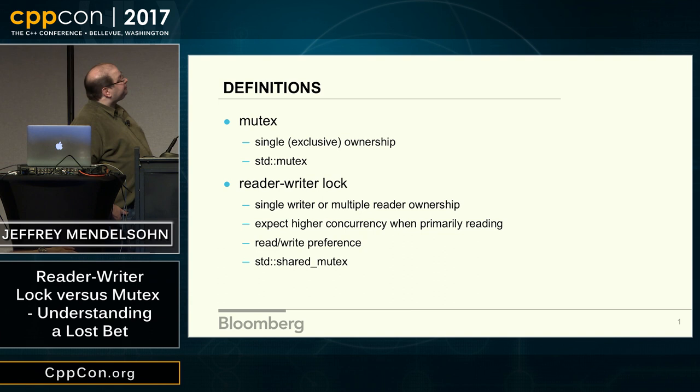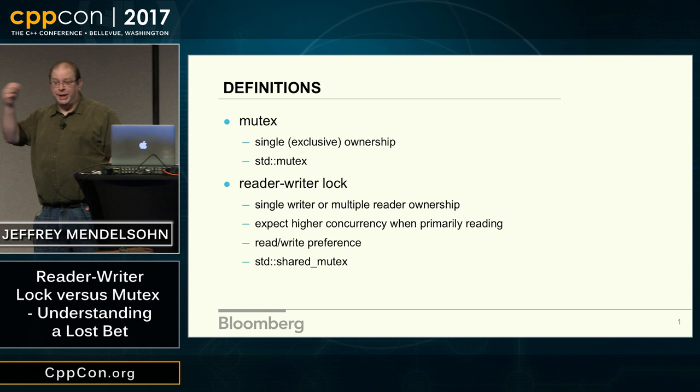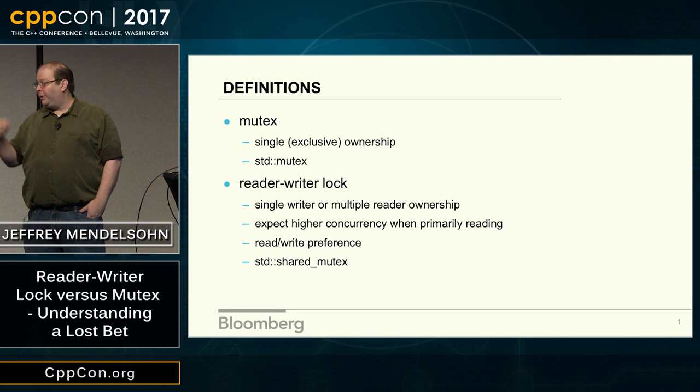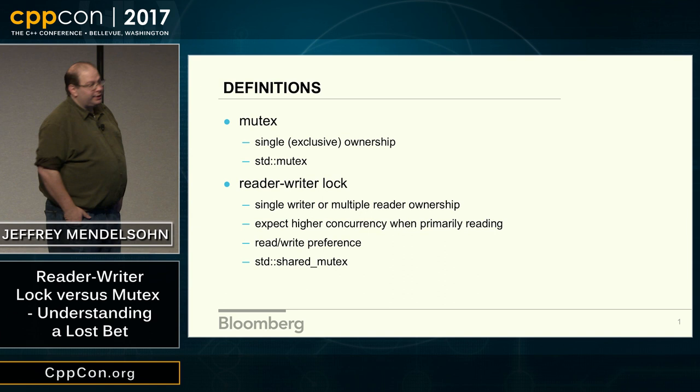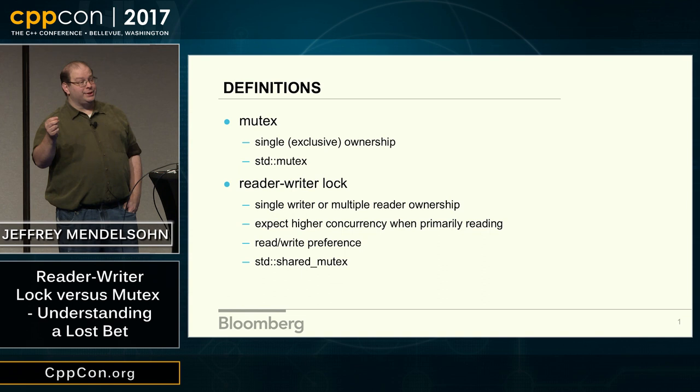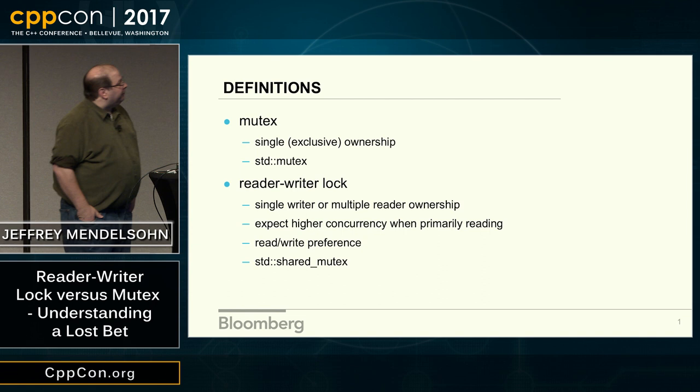We expect higher concurrency when we use a reader-writer lock. With a mutex we can only allow one thread in at a time, but with a reader-writer lock we can have many readers going through at the same time. However, when a writer comes, something different has to happen — that writer has to be given an opportunity to get the lock eventually. That's what I'm referring to with read-write preference. A read-preferring lock allows readers to continuously reacquire the lock, which will starve out your writers. A write-preferring lock, when a reader comes up, will check if there are writers waiting; if so, the reader waits for the writer to go through, then all readers go through at once.